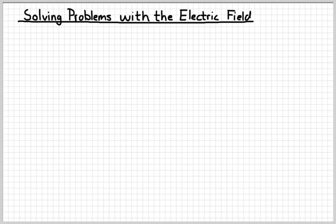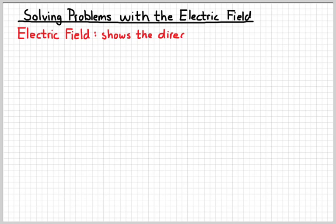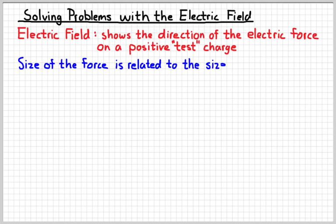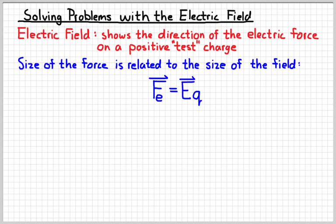In this video we are going to look at a couple of examples of how we can use the electric field to solve problems and understand what's going on in the space around a charge. Remember our definition of the electric field: it shows the direction of the electric force on a positive test charge placed at a particular location. The size of the force is related to the size of the electric field — the electric force on a charge equals the electric field at that point times the magnitude of that charge, using lowercase q for the small charge.